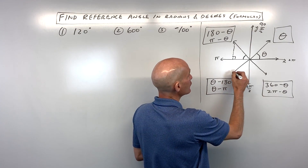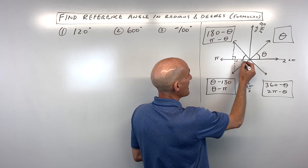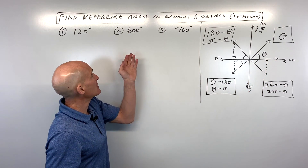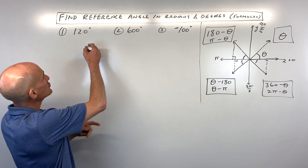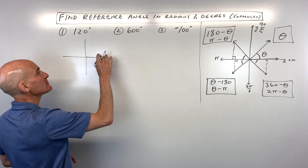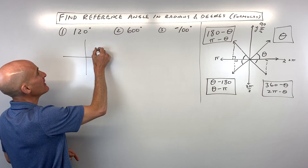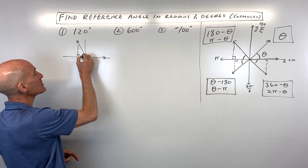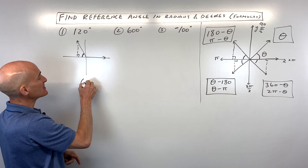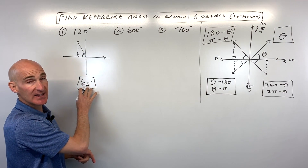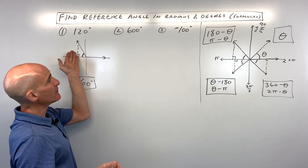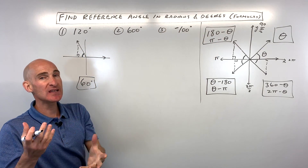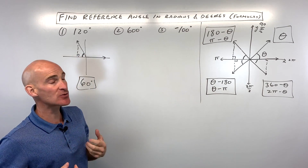For example, 120 degrees. It's positive, so we're going counterclockwise. We pass 90, a little bit more is 120. If I drop a perpendicular, how many more degrees does it take to get to the x-axis? That's 60 degrees — between 0 and 90, and positive. That's our reference angle. Or, since we're in the second quadrant, we can use the formula: 180 minus 120 is 60. You can use the formula or draw a sketch intuitively.